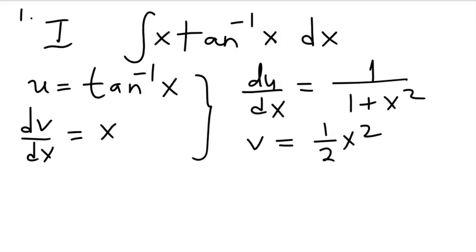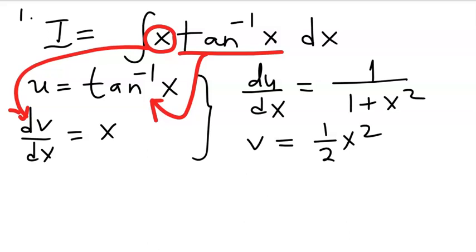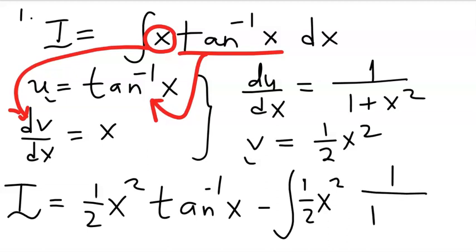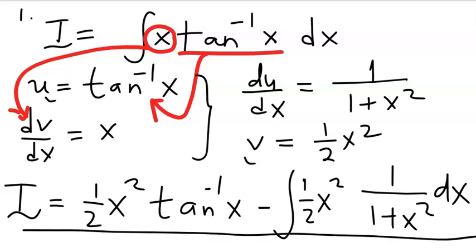Let's call this integral I. We have taken x to be dv/dx and arctan(x) to be u. Employing the integration by parts equation, I becomes u·v minus the integral of v·(du/dx). So I = (x²/2)·arctan(x) minus the integral of (x²/2)·(1/(1+x²)) dx. This is the integration by parts equation we have used, and clearly the right-hand integral is easier to solve.